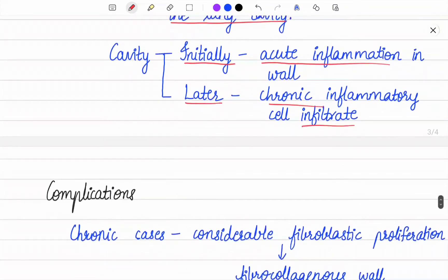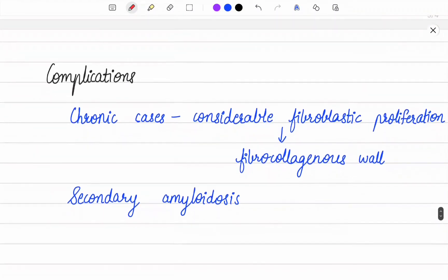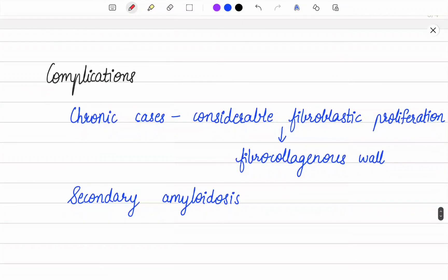In more chronic cases, considerable fibroblastic proliferation occurs, leading to a fibrocollagenous wall. Sometimes secondary amyloidosis may also occur.